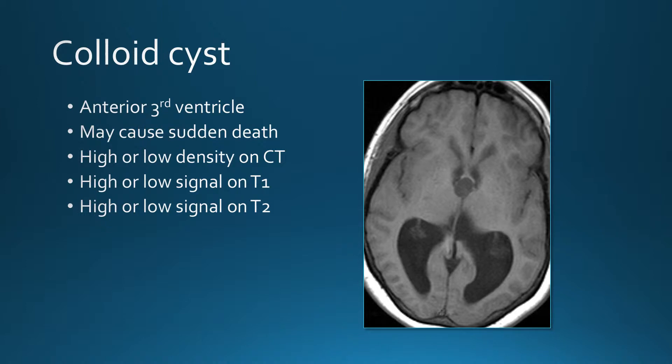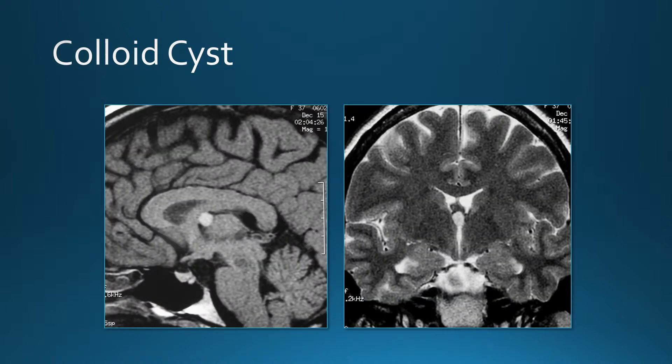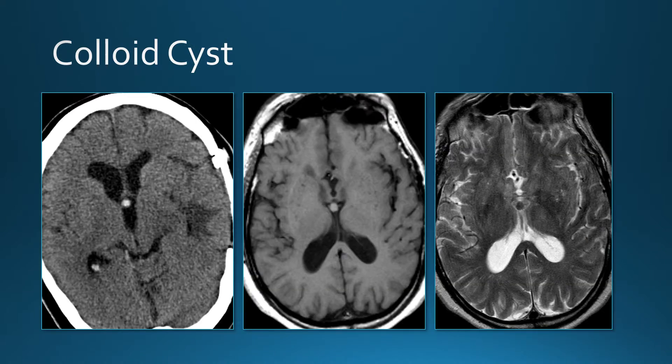Colloid cysts occur in the anterior third ventricle and can cause sudden death. On CT they can be high or low density. On MRI they can be bright or dark on T1, or bright or dark on T2 — the signal is very variable depending on the protein content. Here's a colloid cyst that's bright on T1 and bright on T2. Another one that's high density on CT, bright on T1, and dark on T2.